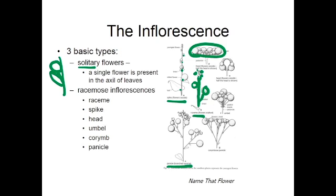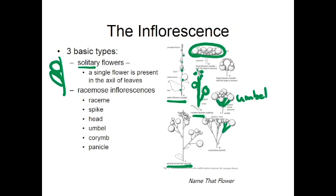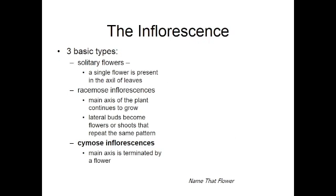We could make all of the pedicels the same length and originating from the same spot and get an umbrella-like umbel. Alternatively, making all the flower stalks different lengths but having all the flowers on a single plane gives you a corymb. We're using a whole range of different inflorescences with very simple changes. Those are all racemose inflorescences.